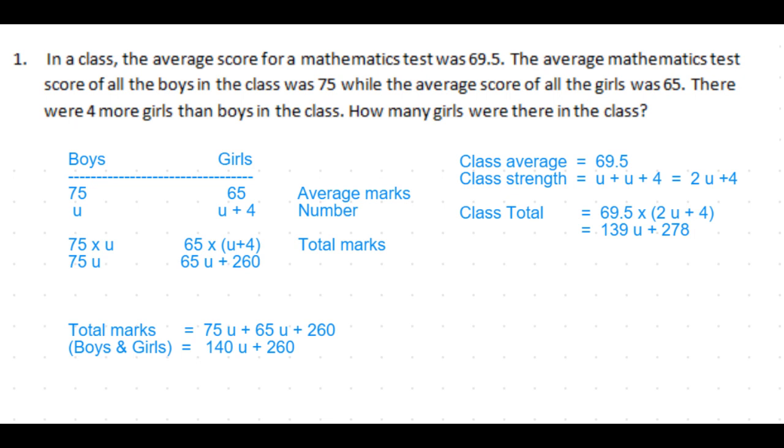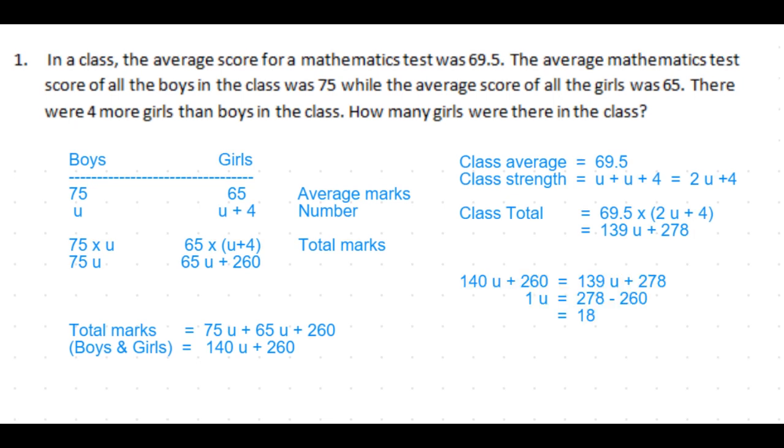Which is 69.5 times 2u plus 4. 69.5 times 2u is 139u plus 69.5 times 4 is 278. So we have got the class total from two separate equations: one is 140u plus 260, another is 139u plus 278. When we equate these two, we get the value for one u.